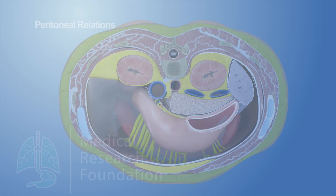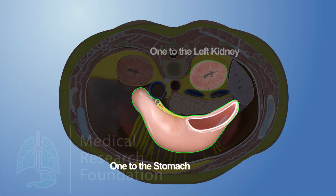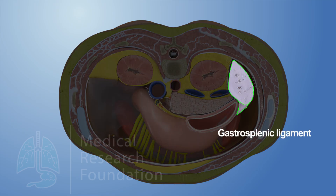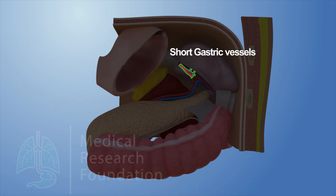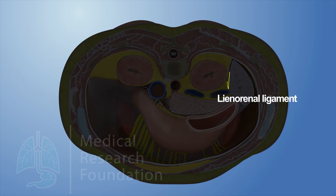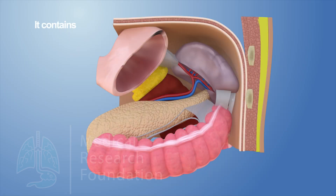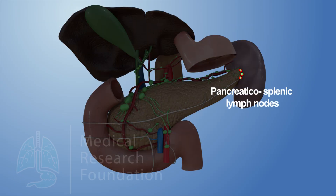The spleen is completely enclosed in the peritoneum except at its hilum, from where two peritoneal folds extend — one to the stomach and one to the left kidney — called the gastrosplenic and lienorenal ligaments respectively. The gastrosplenic ligament extends from the hilum of the spleen to the upper one-third of the greater curvature of the stomach and contains short gastric vessels. The lienorenal ligament extends from the hilum of the spleen to the anterior surface of the left kidney and contains the tail of the pancreas, splenic vessels, and pancreaticosplenic lymph nodes.